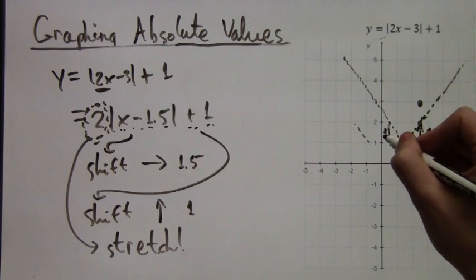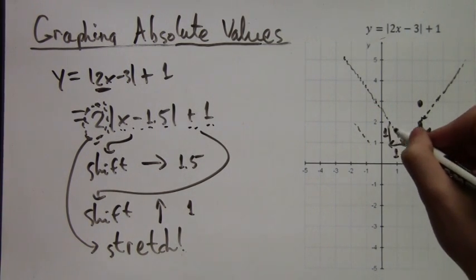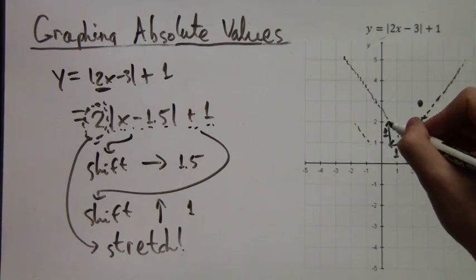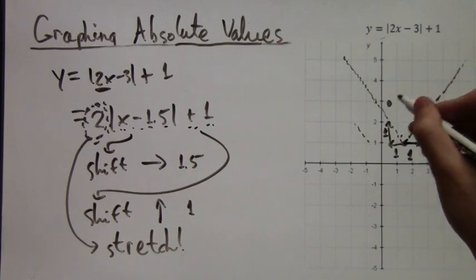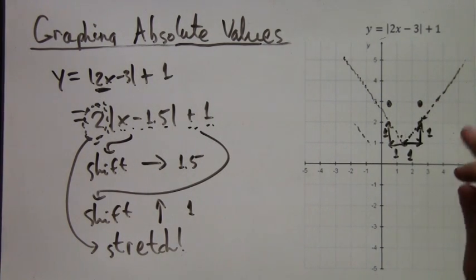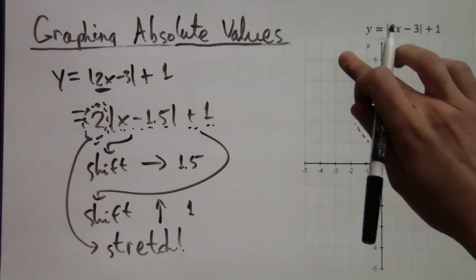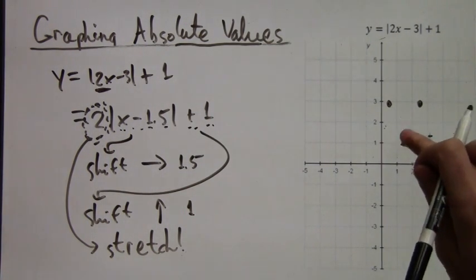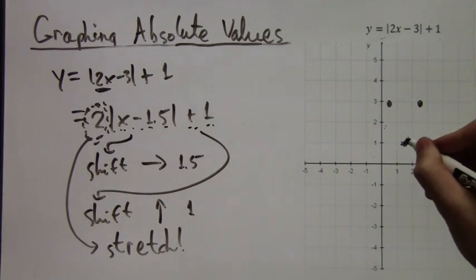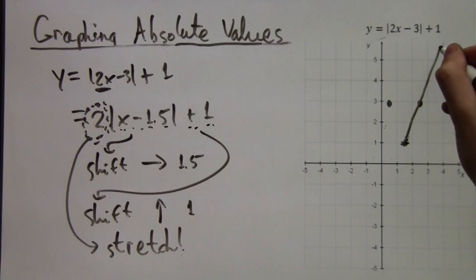On the other side, if we move 1 to the left, then instead of moving 1 up, we're going to move 2 up. So these two points let us draw the two lines that end up making our graph. Let me show you. If you connect these two points, that's one side.